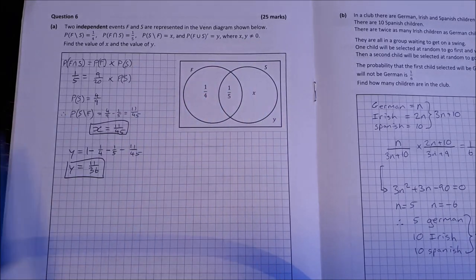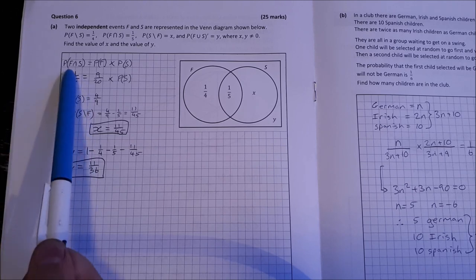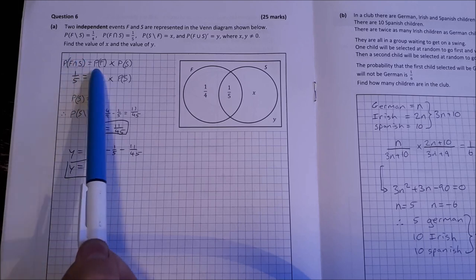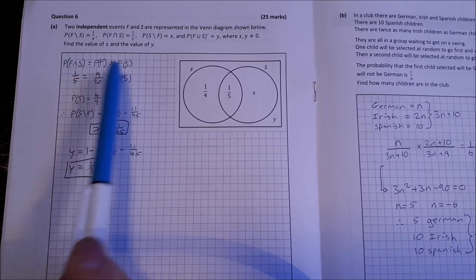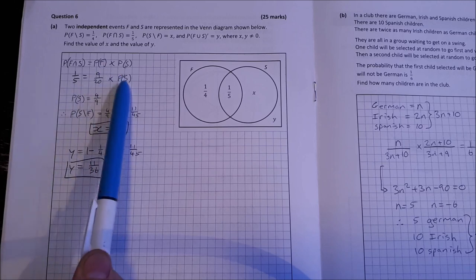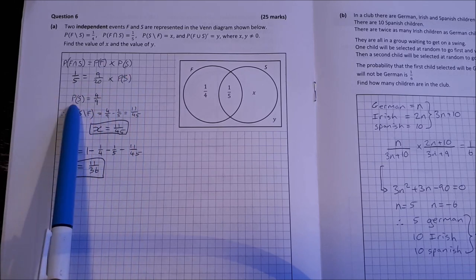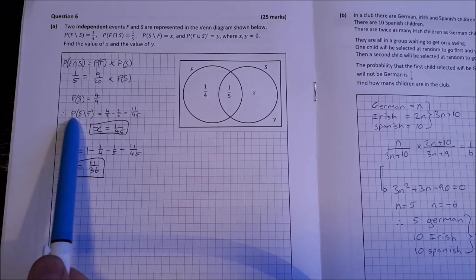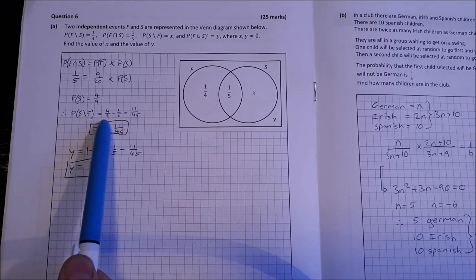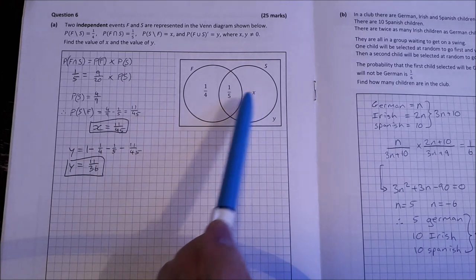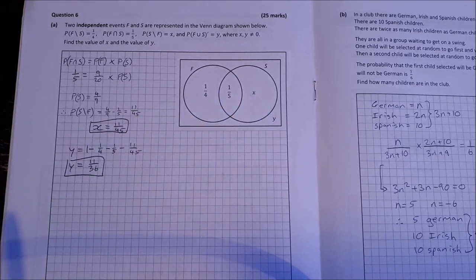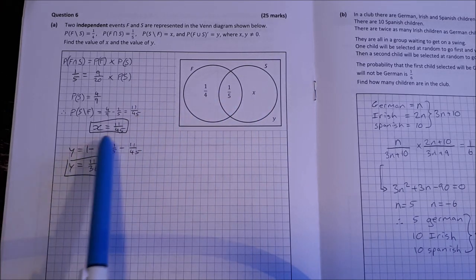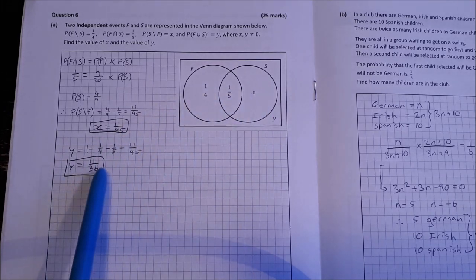So we use our independent events formula. The probability of F intersection S is the probability of F times the probability of S. We know this, we know this, we don't know this. So sub them in and you end up getting the probability of S is 4 over 9. So we could fill in probability of S less F is 4 over 9 minus this. So that's X is 11 over 45. And then that means Y is 1 minus this, this and this, which is 11 over 36.